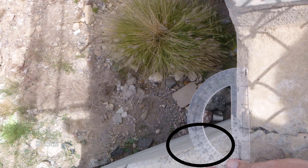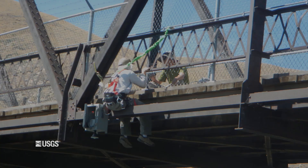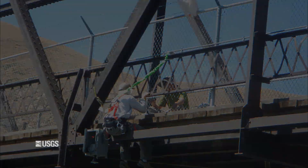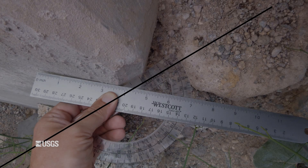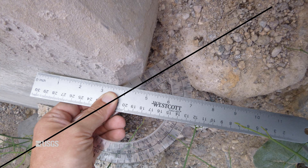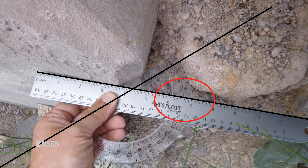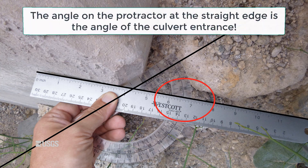Be careful when you are this close to an edge — the use of fall protection equipment may be needed. Another way you can measure the angle is to place a protractor perpendicular to the flow at the upstream end of the wing wall, so 0 degrees points to one bank and 180 degrees to the other bank. Now use a straight edge to line up with the stream side of the wing wall so it projects upstream. The angle on the protractor at the straight edge on the bank side will be the same angle as the culvert entrance.